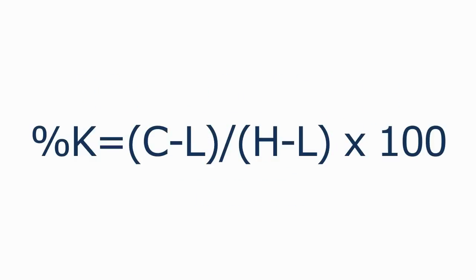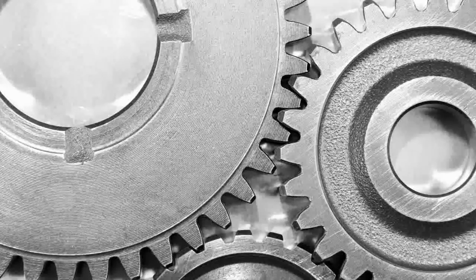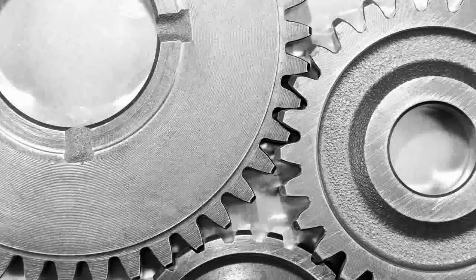You're going to find different calculations depending on the charting package that you're using, but this is the proper formula for the fast stochastics. The slow stochastic is calculated a little bit differently, where the K is a three-period moving average of the fast K, and percent D is an X-period moving average of the fast K. Just keep things simple — even if your charting platform has a different calculation, just use what's available. Remember that any trading indicator is just a cog in the wheel of a complete trading system, and you're probably not going to rely on just one thing to indicate a trading opportunity.